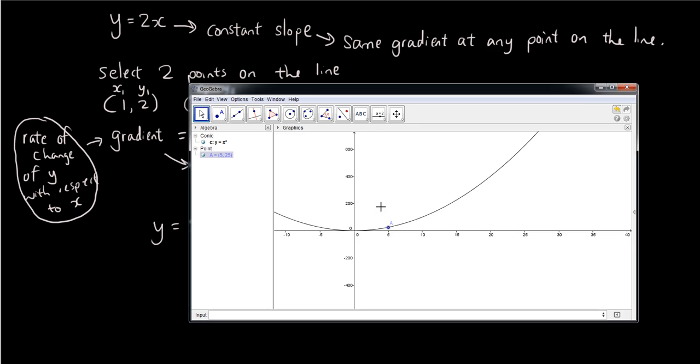That's our first point. If we draw a second point, let's say when x is equal to 10, and y is equal to, let me move my graph again. When x is equal to 10, y is equal to 100, a bit hard to move the points.